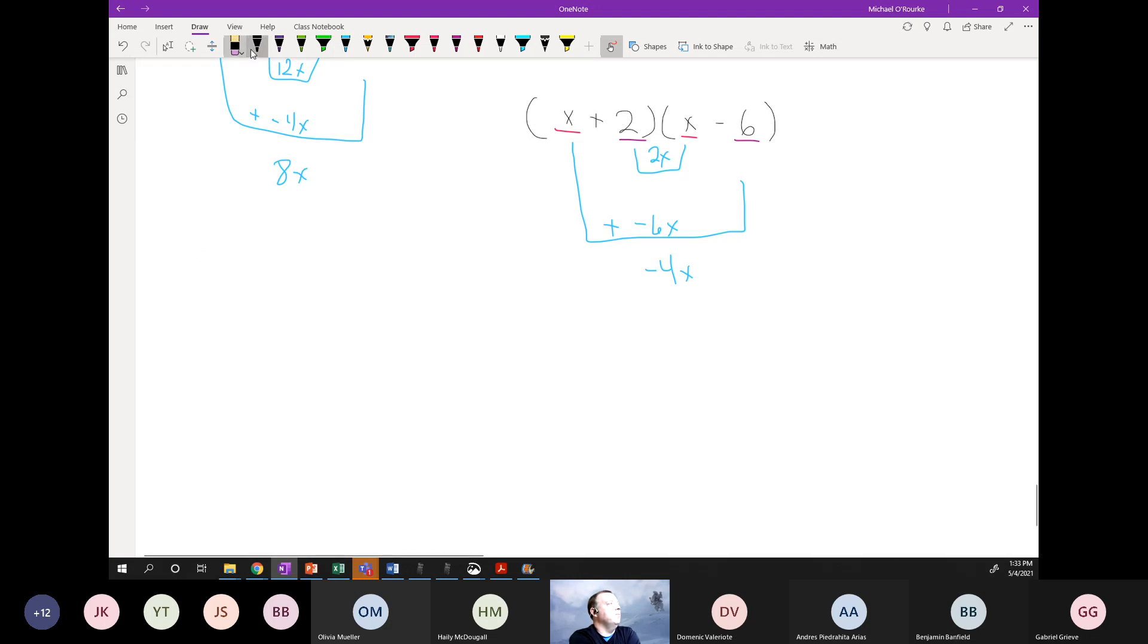So let me do another one. Let's go x squared minus 10x minus 39. Yeah, I like that one. Those two lines are the wrong color.